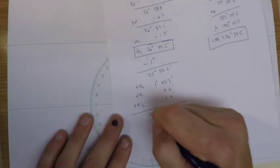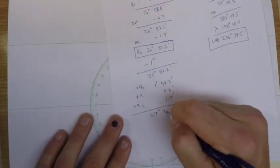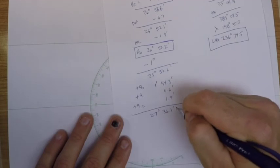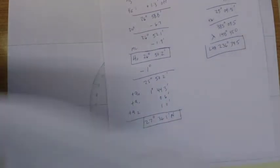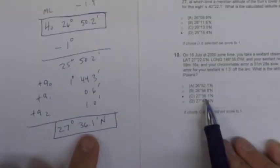I'll end up with a final value of 27 degrees 36.1 for my latitude by Polaris. If I examine the answers to the question here you can see that we ended up right where the Coast Guard did. So I'll call that one correct.